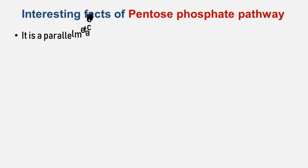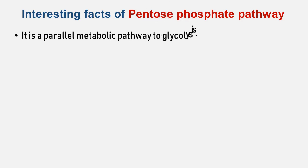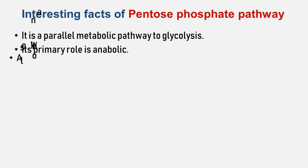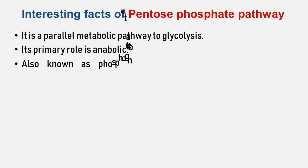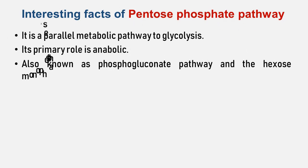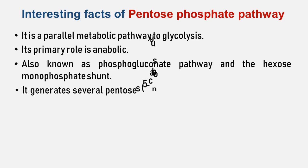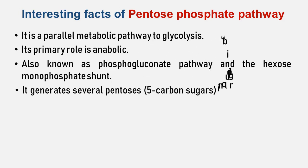The pentose phosphate pathway is a metabolic pathway parallel to glycolysis. While it does involve oxidation of glucose, its primary role is anabolic rather than catabolic. It is also called the phosphogluconate pathway and the hexose monophosphate shunt, because it pushes the glucose 6-phosphate that is hexose monophosphate from the main pathway to a sideline pathway — the process is called shunting.